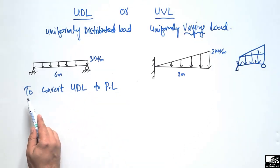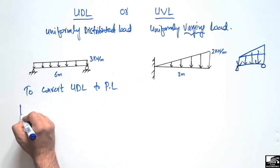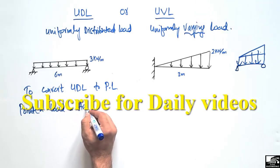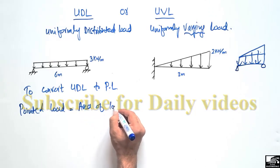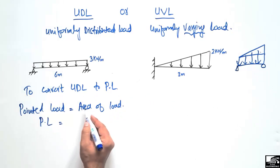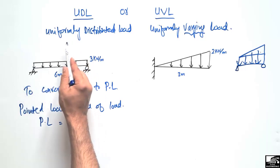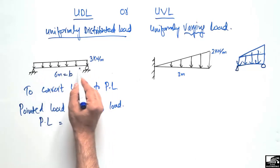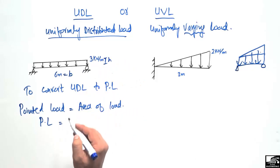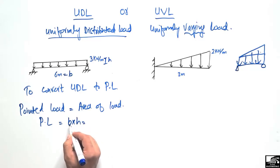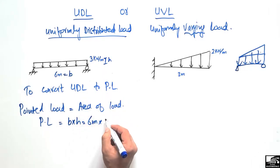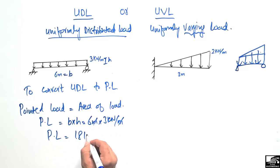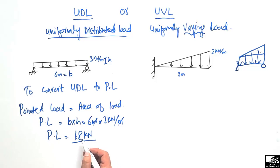To convert a uniformly distributed load into a pointed load, we use the formula: pointed load PL equals the area of the load. Since UDL is always a rectangular load, the area is width B multiplied by height. Here B is 6 meters and height is 3 kN per meter, so the area is 6 × 3 = 18 kN. This is the equivalent pointed load.